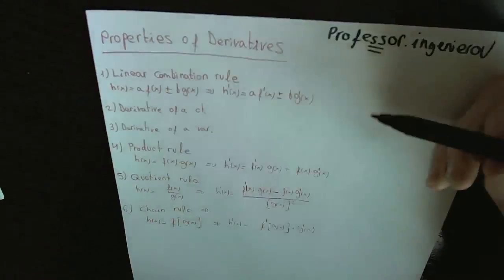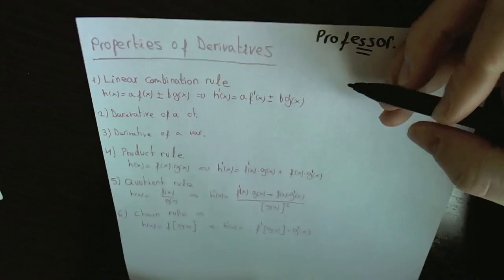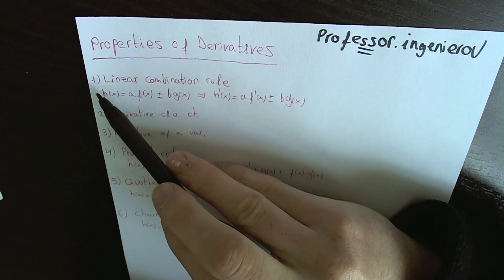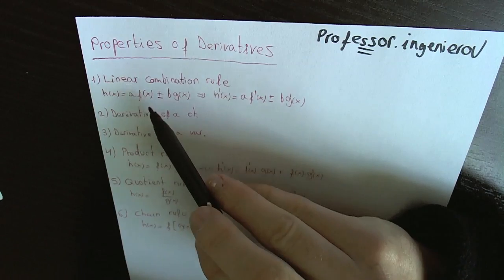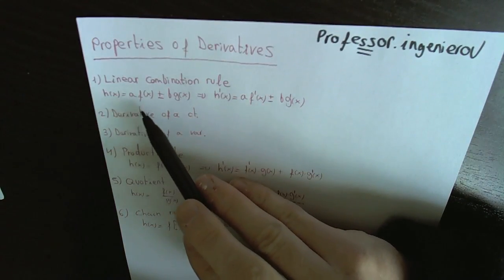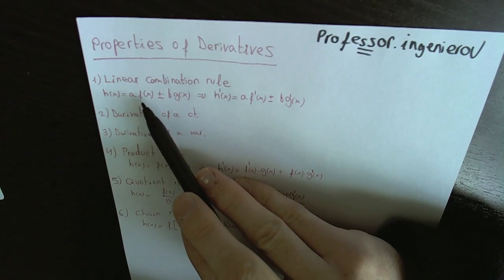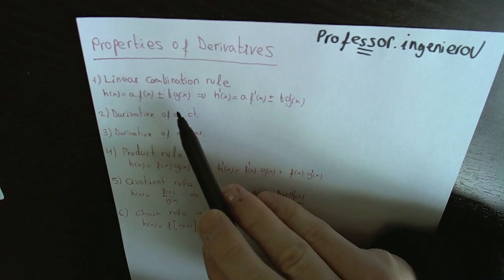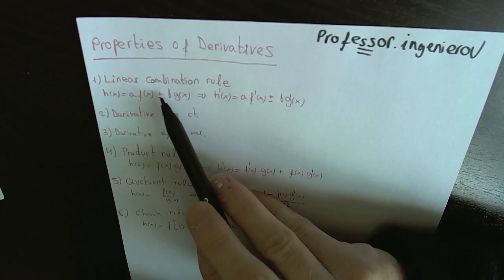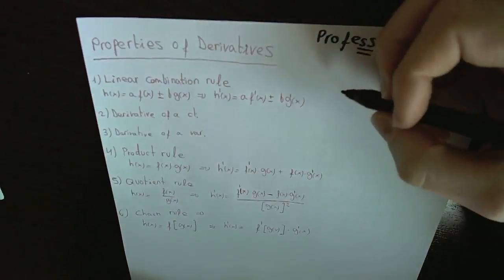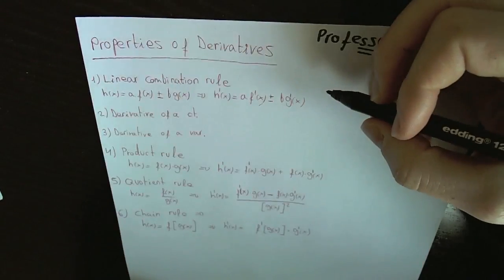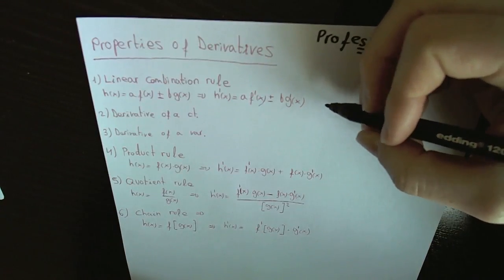The first property is the linear combination rule. If we have a function that is a combination of different functions, for example f and g, and they are in addition or subtraction, the rule would be the following, which I will explain with an example.